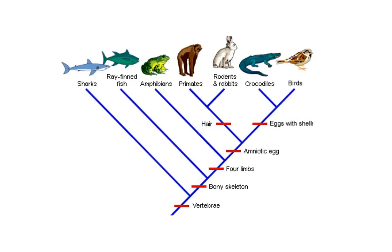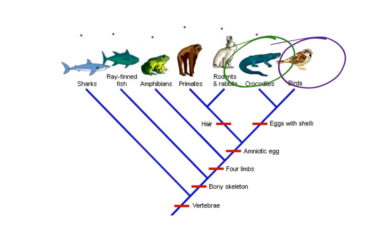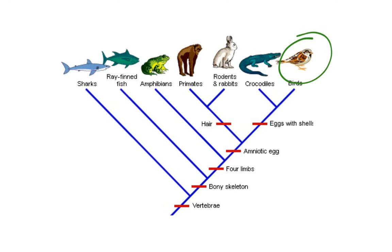Another thing we can see from a cladogram is how closely related two organisms are. If we ask which creature is most closely related to birds — which has the most recent common ancestor with birds — the answer is crocodiles, because they converge with birds at a closer point on the cladogram than any other organism. The evolutionary distance between birds and crocodiles is much less than between birds and rabbits; we would have to go much further back in time to find a common ancestor between birds and rabbits.